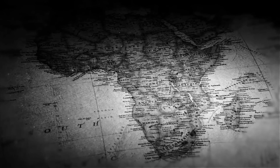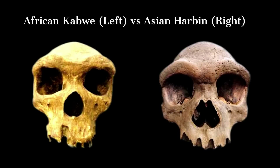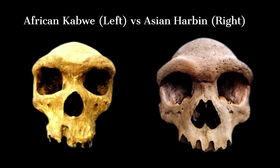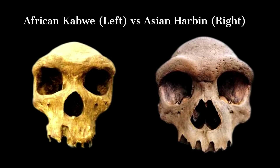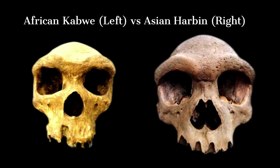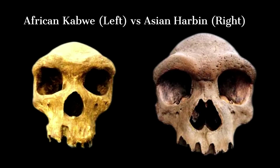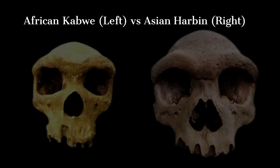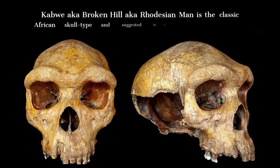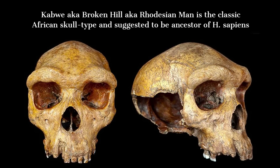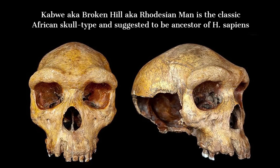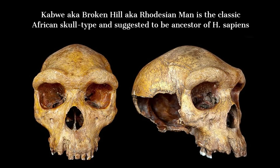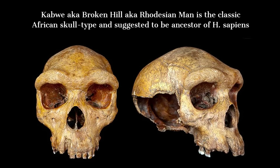In the heart of Africa, in what is now known as Zambia, lies a story that spans hundreds of thousands of years — the tale of the Kabwe cranium, also referred to as the Broken Hill Skull or Rhodesian Man. This ancient relic, discovered in 1921 near the town of Kabwe in southern Africa, offers us a window into the life of a remarkable individual. The Kabwe cranium, estimated to be 150,000 to 300,000 years old, represents an early human from the Middle Pleistocene era — a fossilized skull belonging to an unknown species.